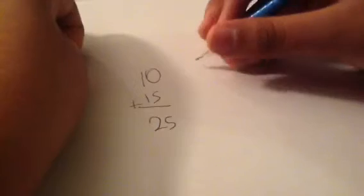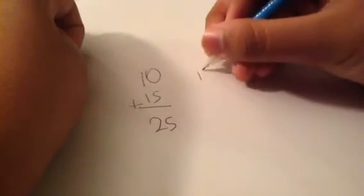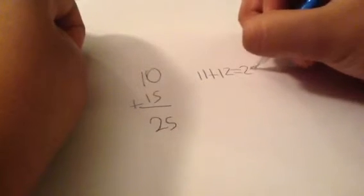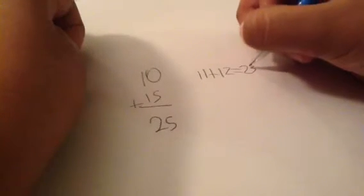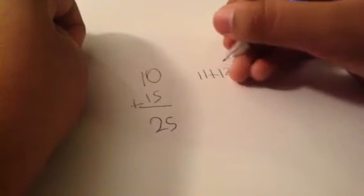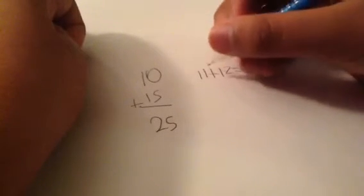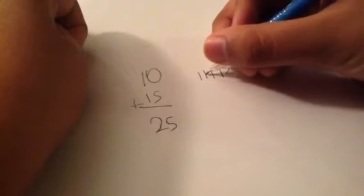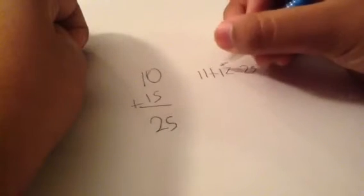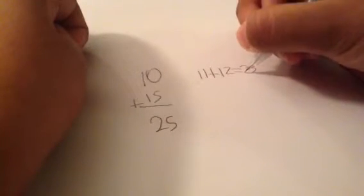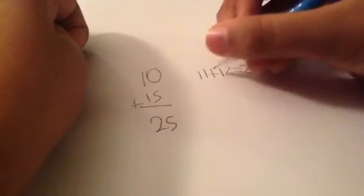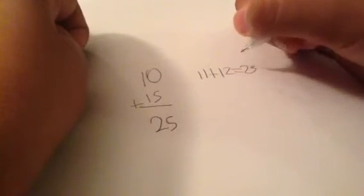So and you might see not a problem like this, 11 plus 12 equals 23. It might that the 23 might not show up but equals 23. So what you do is 1 plus 2 equals 3 and here 1 plus 1 equals 2.